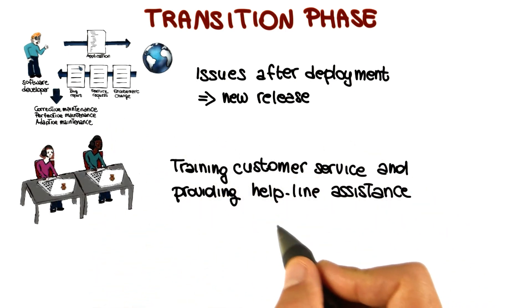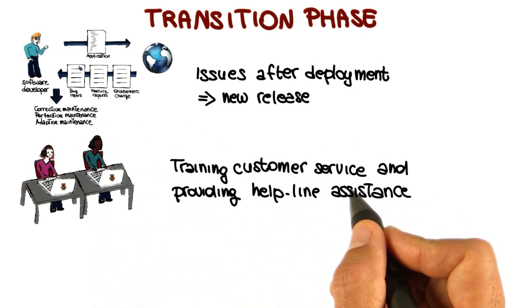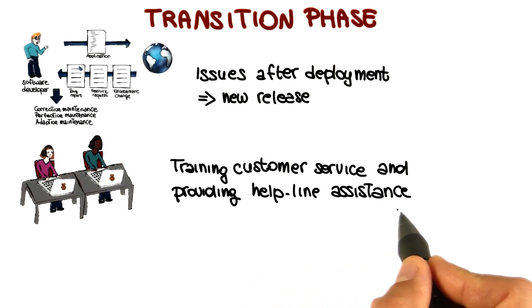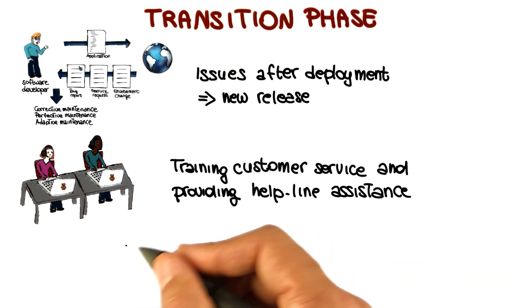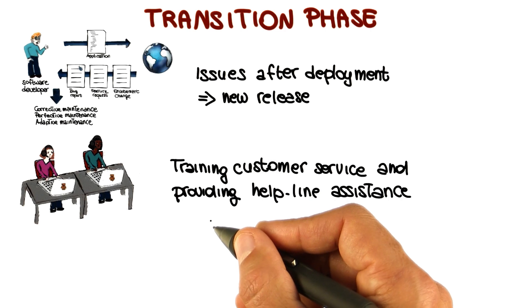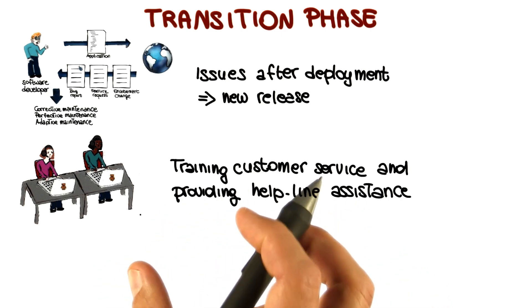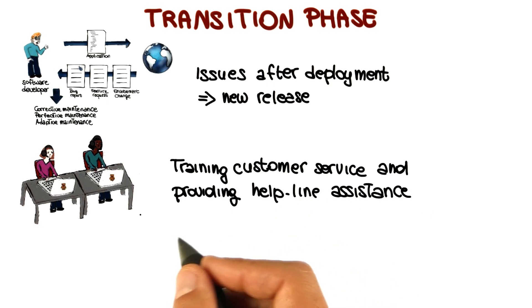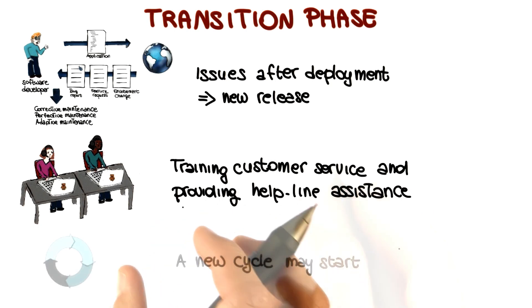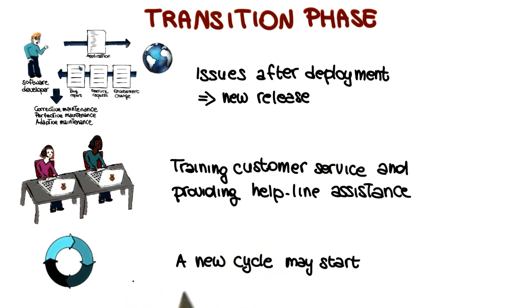Other activities that are performed in this phase include training customer service and providing helpline assistance. Finally, if you remember what we saw when we were looking at the banking IT system example, the cycles within a development are not necessarily completely disjoint, but they might overlap a little bit. So something else that might happen in the transition phase is that a new cycle may start.